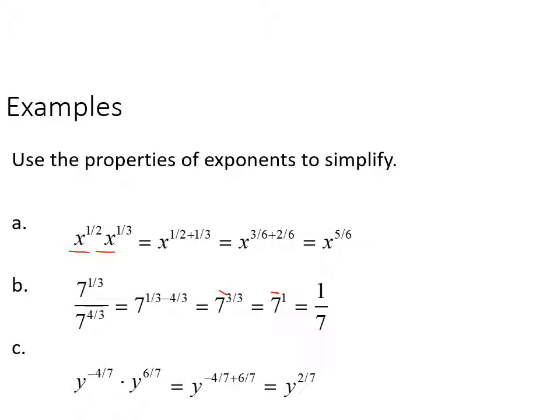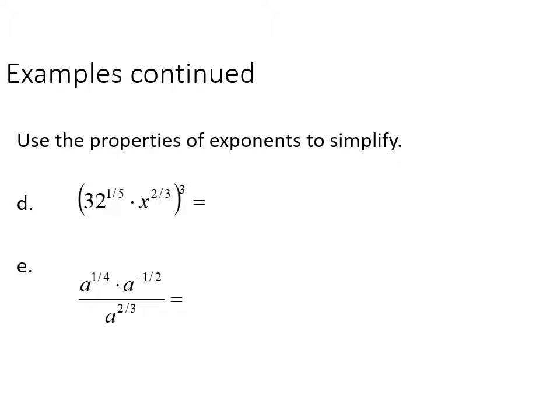The reason I used fractions is because you tend to make mistakes with them, so here are fraction problems to reference. Next example: 32 to the one-fifth times x to the two-thirds, all to the third power. Since the bases are different, I distribute the three by multiplying each exponent inside: three times one-fifth is three-fifths, and three times two-thirds is six-thirds which equals two. Since I can't combine them further, I simplify using radical rules.